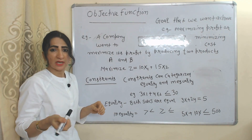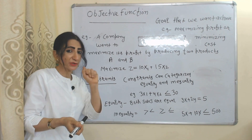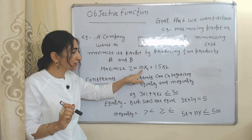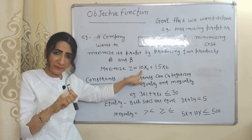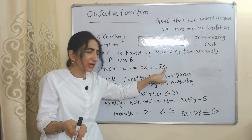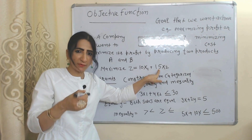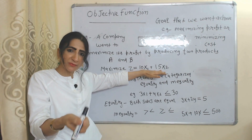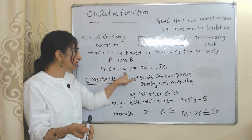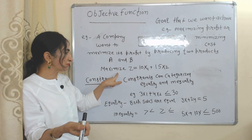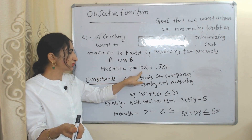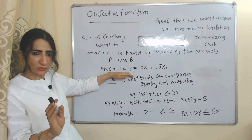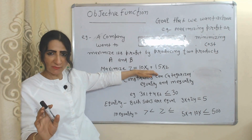Suppose a company wants to maximize their profit by producing two products A and B. x1 units of product A with 10 rupees per unit profit, and x2 units of product B with 15 rupees per unit profit. The total profit which the company wants to maximize is our objective function: Maximize Z = 10x1 + 15x2.